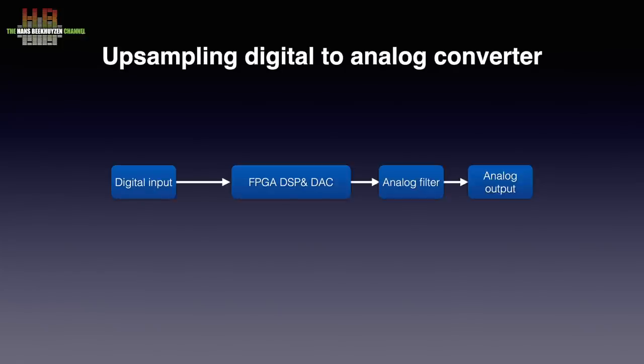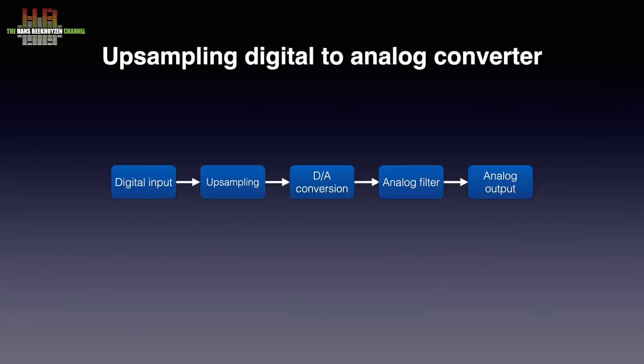FPGAs can be uploaded with proprietary filter codes. With upsampling DACs a simple analog filter can be used since the sampling frequency is 2 to 8 times higher because of the upsampling. Every doubling of the sampling frequency gives another octave to roll off the filter. So upsampling to 192 kHz means that the reconstruction filter has to filter at 96 kHz. In practice the filter will already set in quite a bit lower — for instance at 40 kHz — and has a more gradual slope, which will sound better, all other things being equal.